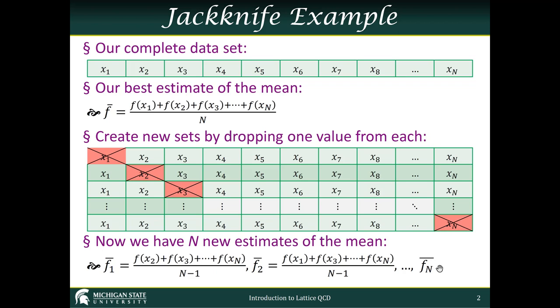Now we can create our new datasets by dropping one value from each. On the first dataset we drop x1, the second we drop x2, then x3, and so on until we drop xn in the last dataset. Now we have n new estimates for the mean, which we'll denote by f1-bar, f2-bar, and so on. You can see they differ from our original estimate just by the fact that the f value for that sample no longer appears, and the denominator is now n minus 1 instead of n.